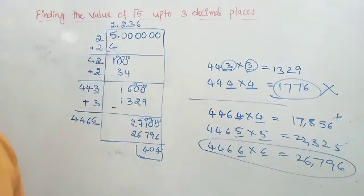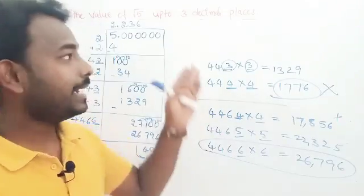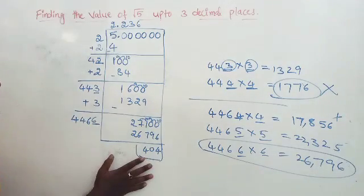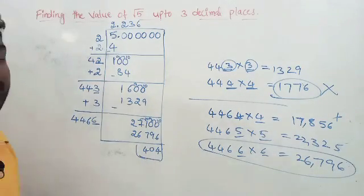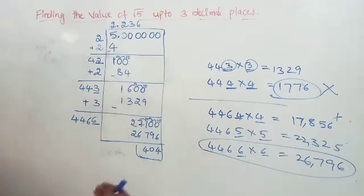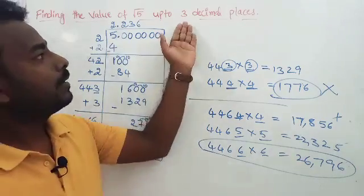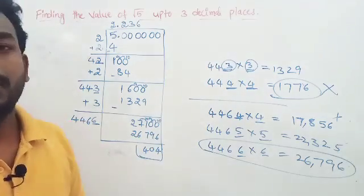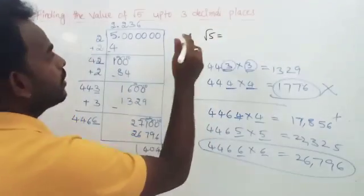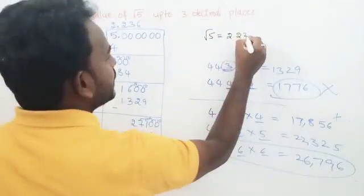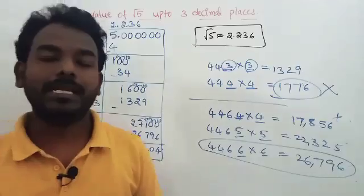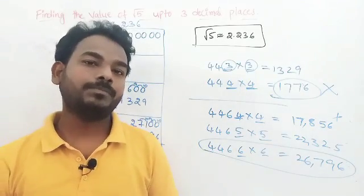Looking at the quotient, we have 2.236. So we need up to three decimal places, and that is our answer. If you want to find the next digit, you add 6 to the divisor, bring down two more zeros, and continue the same procedure for as many decimal places as needed. The value of root 5 up to three decimal places is 2.236 — it is approximate because it is not a terminating decimal number. Hope you have understood. Thank you.